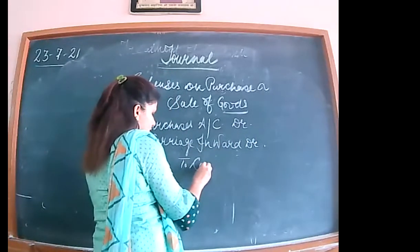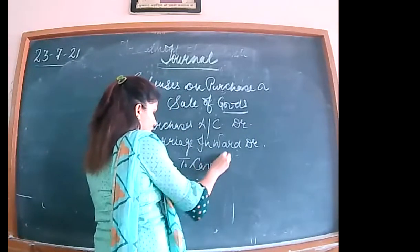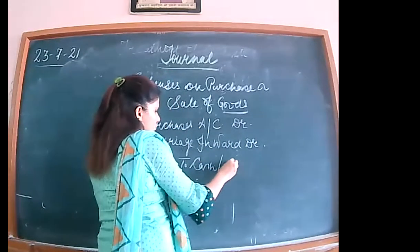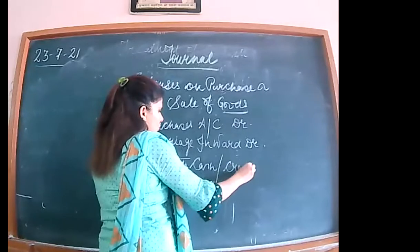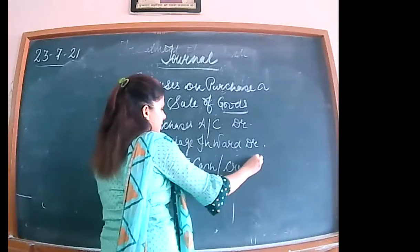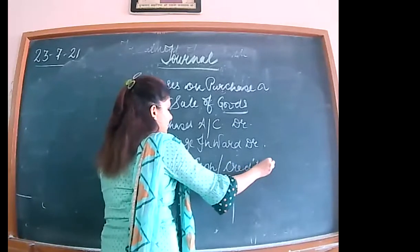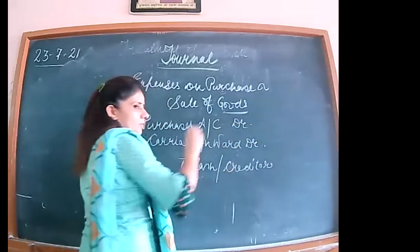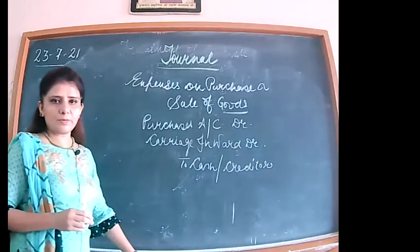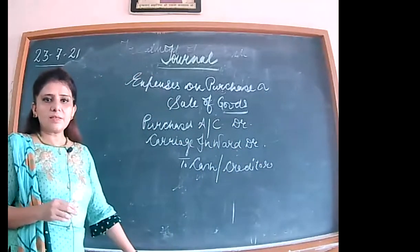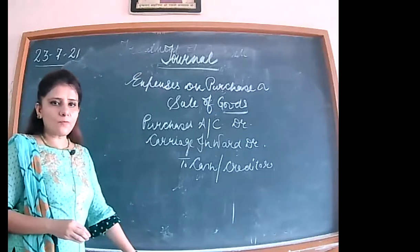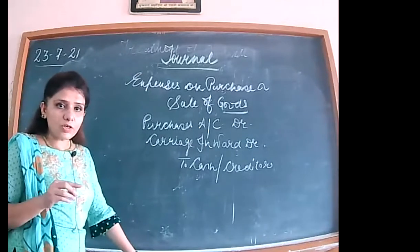If the purchase is in cash, you have to write cash. If it is on credit, you have to write the name of the creditor. The second entry is of sale of goods.